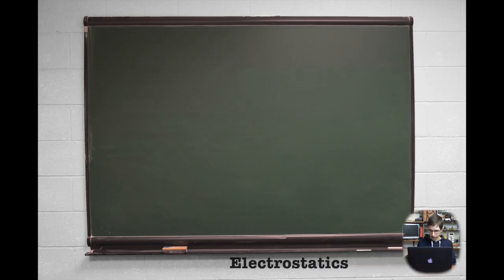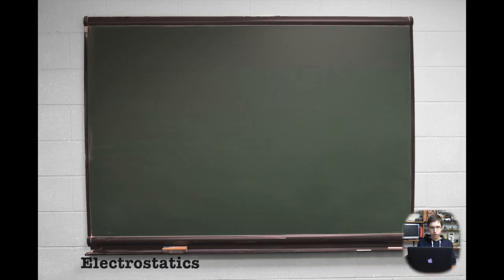Electrostatics is a branch of physics which observes stationary or slow-moving electric charges. It observes static electricity, which is an imbalance of electric charges within or on the surface of a material. Electricity means the presence or flow of electric charges. There is also the type of electricity other than static electricity, called current electricity, which is flowing rather than static charge.